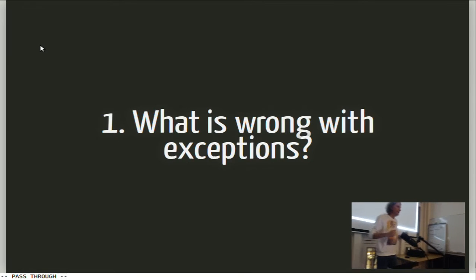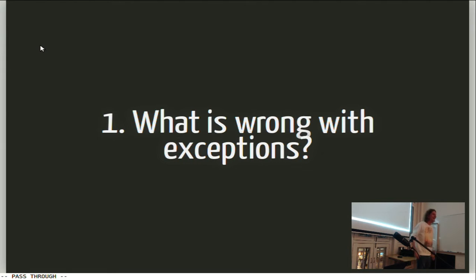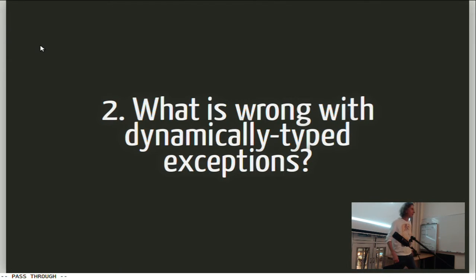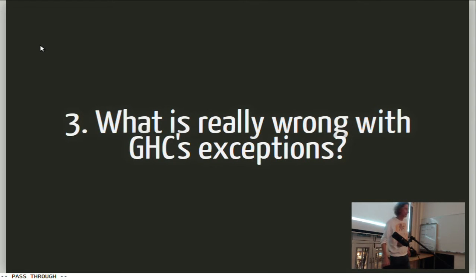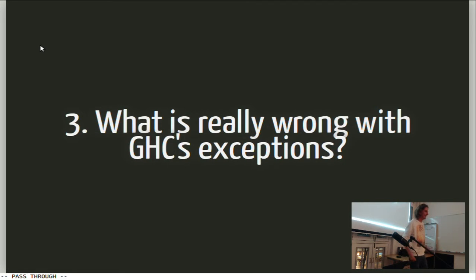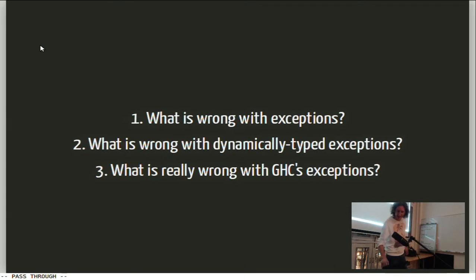So first, we want to look at three things today. First we'll look at what is wrong with exceptions in Haskell in general. Then we will look at what is wrong with dynamic typing — GHC exceptions are dynamically typed. And then lastly we'll look at what is really wrong with GHC's exceptions. The third point is the main point of the talk. It's the shortest part, but it's the interesting part.